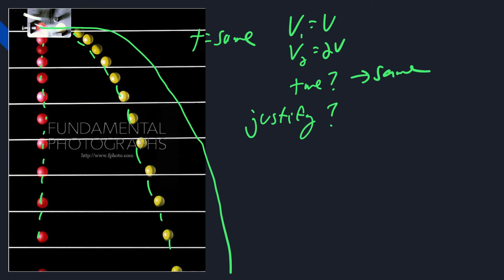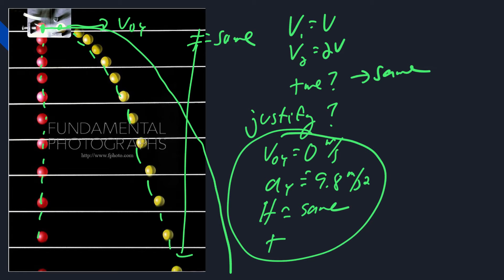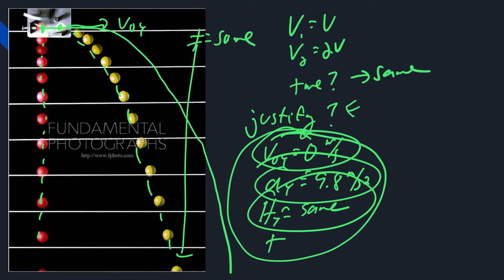What if they ask you to justify your answer on an FRQ? Well, the initial velocity vertically is going to be zero in both cases — this red ball starts at rest, and this yellow ball, even though it has a horizontal velocity, the vertical velocity is zero. The vertical acceleration is the same in both cases — negative 9.8 — and the height they fall from is the same. So if those three conditions are the same, the time must also be the same.